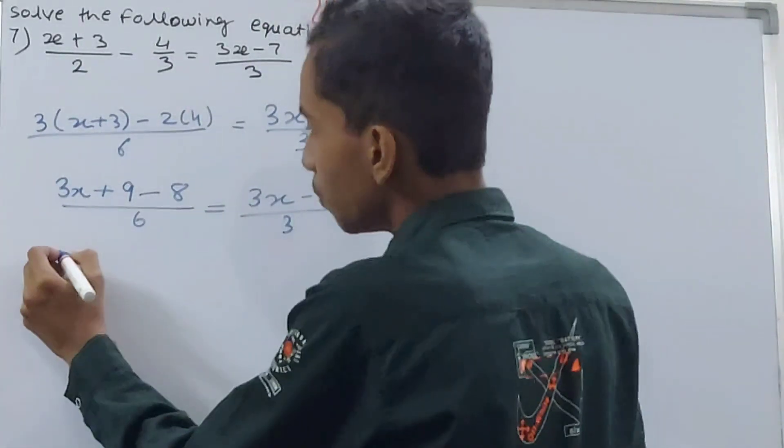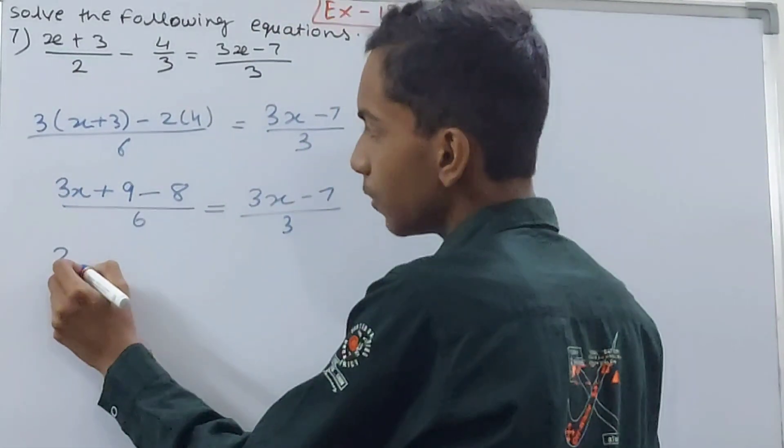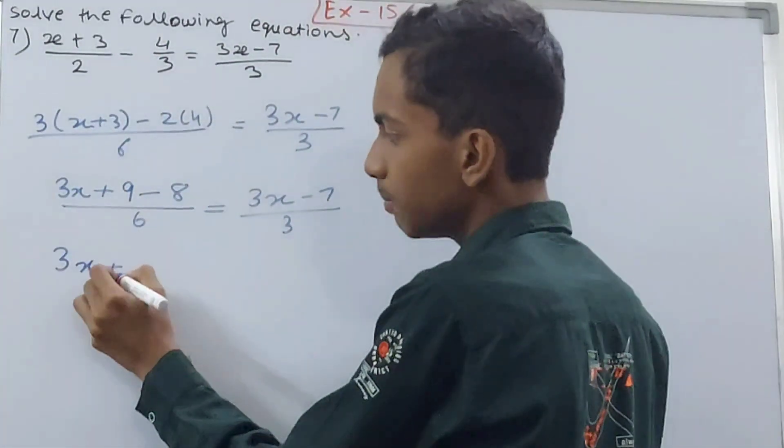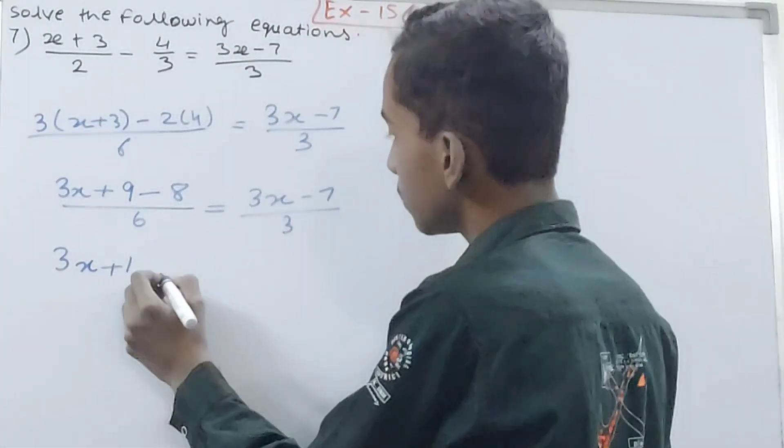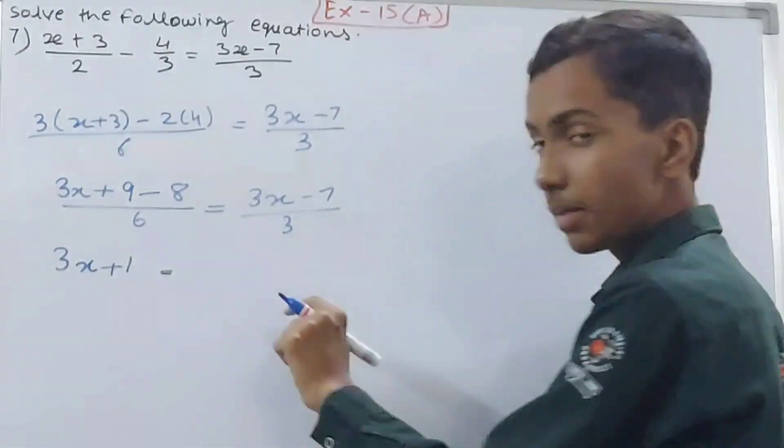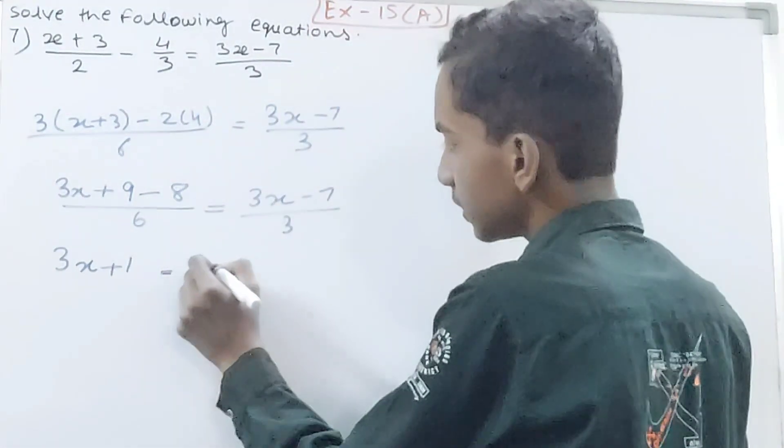First of all, 3x plus 9 minus 8 will become plus 1, right? After combining the like terms, you can take this to the other side. That is (3x-7)/3 times 6. Here it's dividing, so here it will multiply.